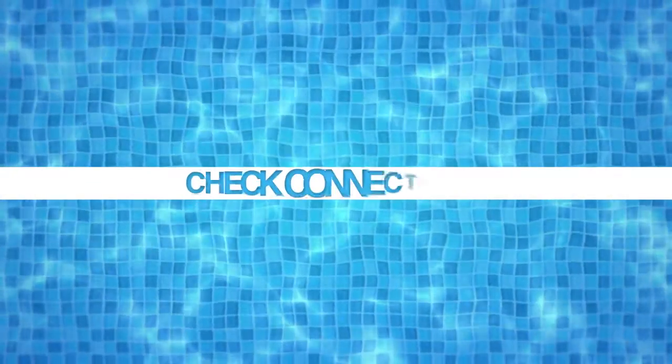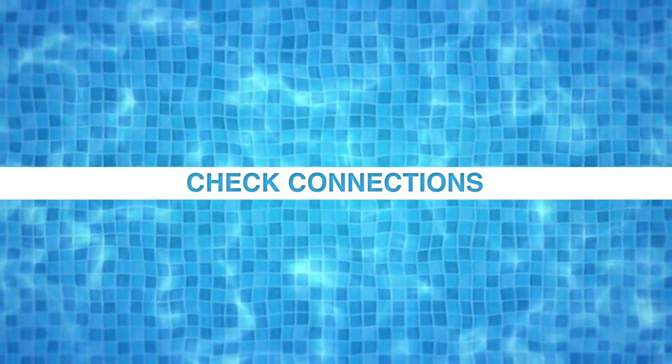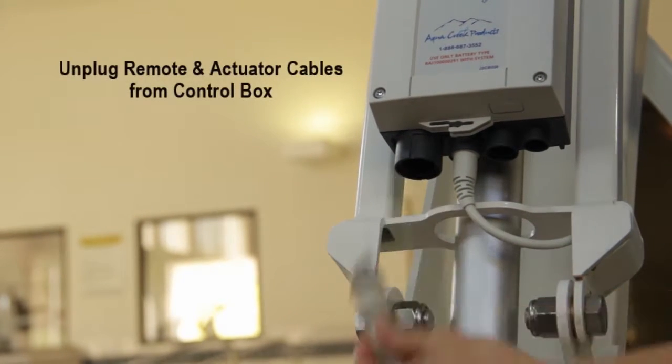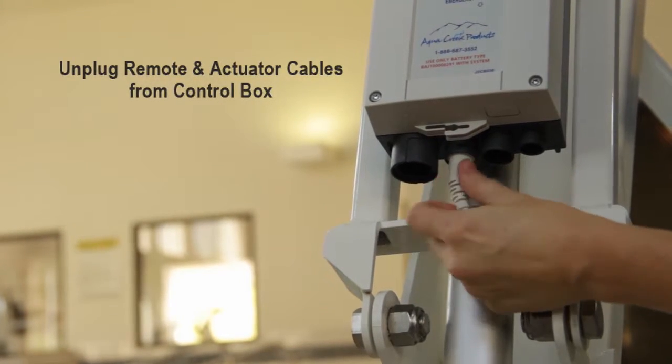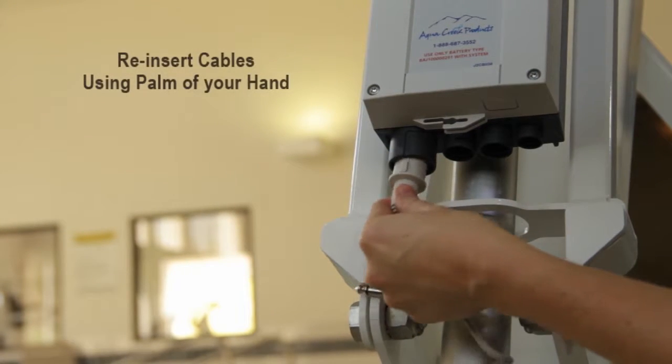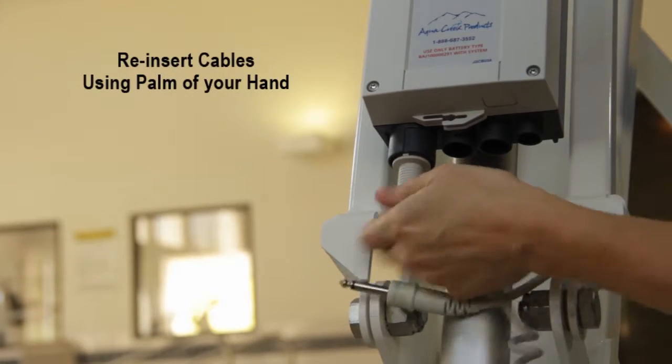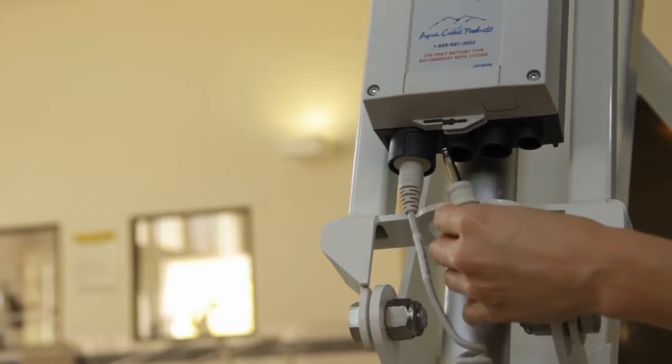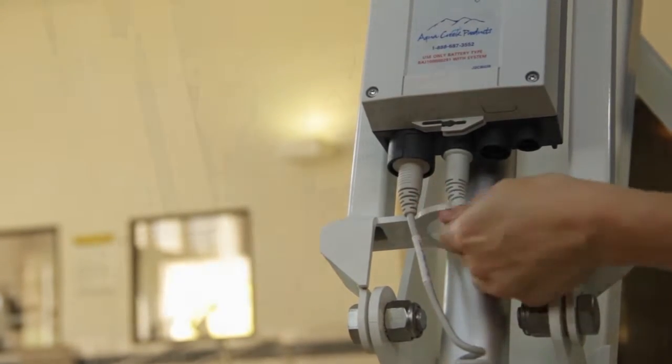If your lift does not retract, check your connections. Unplug the handset cable and actuator cable from the control box. Reinsert the cables into the control box using the palm of your hand. These are watertight connections and can be stubborn.